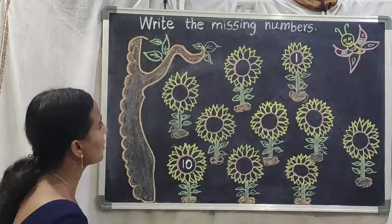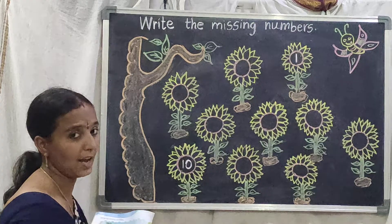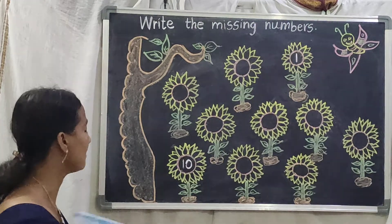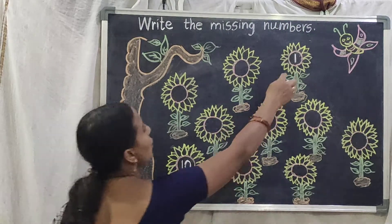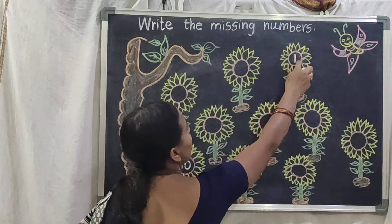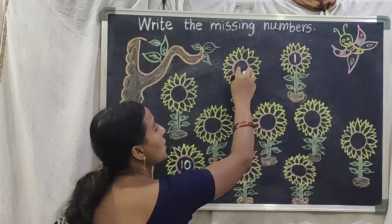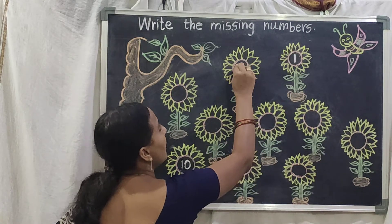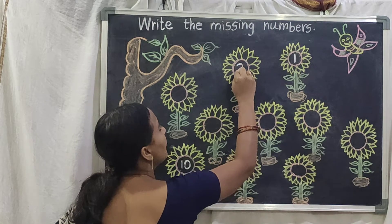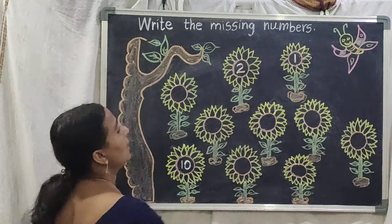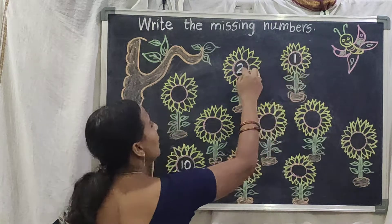So what we should do here? 1 — after which number will come, children? 1 after 2. So here we are seeing the number 1. After 1, what we should write here? Write the number 2 in the middle of the sunflower.